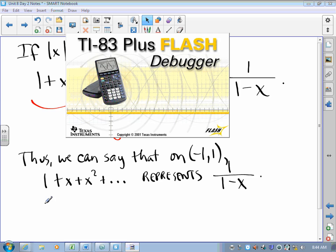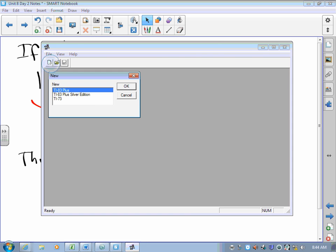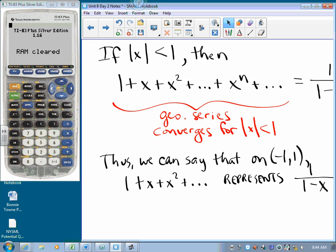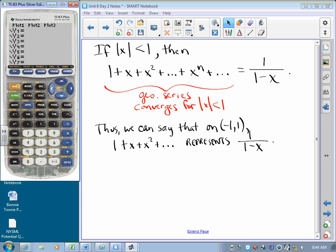It means that on that interval, for example, if I don't know what one over one minus x looks like, I could just take a look at one plus x plus x squared plus x cubed plus x to the fourth on negative one to one, not four, one. Maybe the y values I could bring in a bit. Look at that.